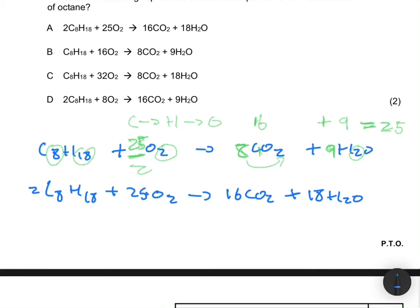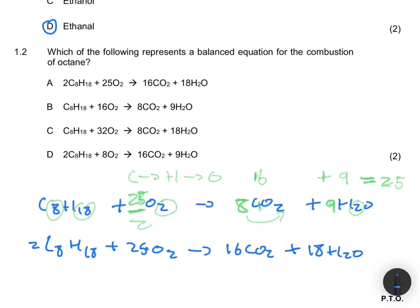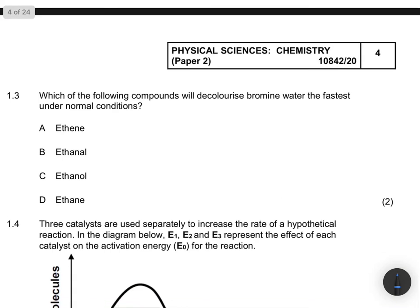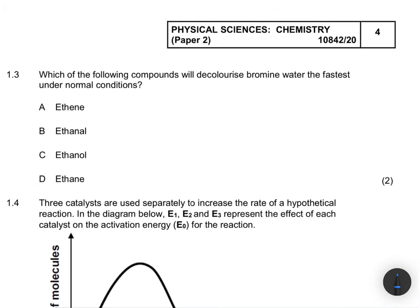Looking at the options, option A shows 2C₈H₁₈ + 25O₂ giving 16CO₂ and 18H₂O — that matches our balanced equation. So for question 1.2, the answer is option A.